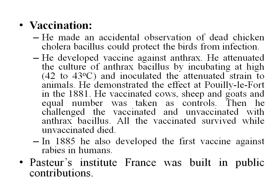One of Pasteur's major contributions — the anthrax vaccine — was demonstrated at Pouilly-le-Fort in 1881. He vaccinated cows, sheep, and goats, with equal numbers of unvaccinated controls, then challenged both groups with pathogenic anthrax bacillus. All vaccinated animals survived, while unvaccinated animals died. In 1885, he also developed the first vaccine against rabies in humans.